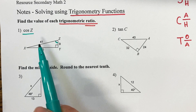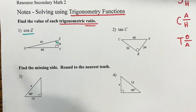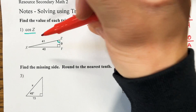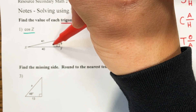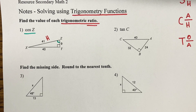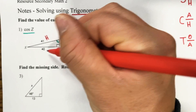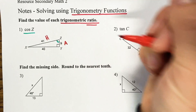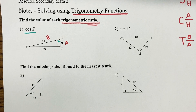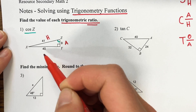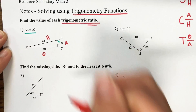From angle Z, we need to identify which of these sides is the opposite, adjacent, and hypotenuse. The hypotenuse is easiest to find because it's always right across from our right angle, so that means 41 is our hypotenuse. Now we have 9 and 40. The 9 side is right next to this angle — it's touching it — so that is our adjacent side. Remember, if you live adjacent to your neighbor, that means you live next to your neighbor. Then 40 is on the opposite side from our angle, so that is our opposite side.